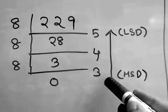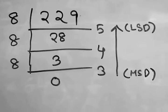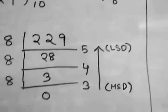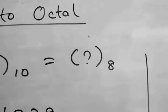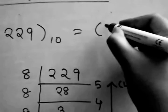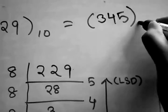So in this manner, from MSD to LSD, we will read the numbers as 3, 4, 5. So in this question mark, we can write as 345 base 8.